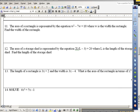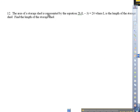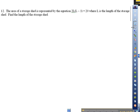Ok, I think we made it to our last video. Let's take a look at number 12. Number 12 says find the area of a storage shed is represented by 2L times quantity L minus 3 equals 20, where L is the length of the storage shed. Find the length of the shed.